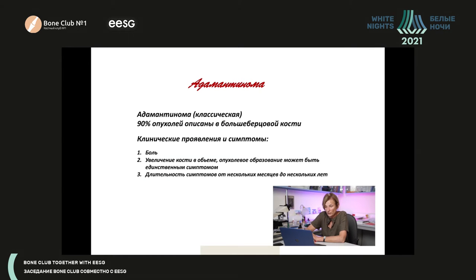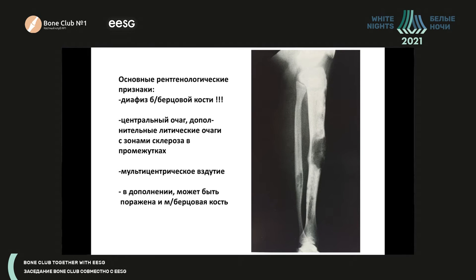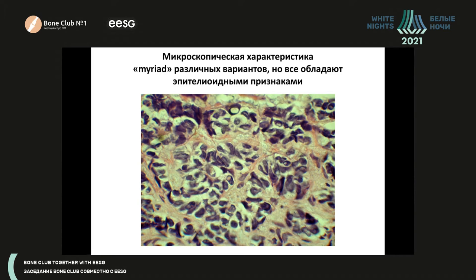Classic adamantinoma is a tumor which was mostly described for the tibial bone. It develops and appears in a long bone diaphysis, distributed along the bone and spread in the cortical plate. It might have multicentric growth, and the main differential diagnosis list includes osteofibrotic dysplasia, fibrotic dysplasia, and sometimes metastatic lesion — but mostly it is a connection of osteofibrotic dysplasia and adamantinoma. These are the main points you should remember.